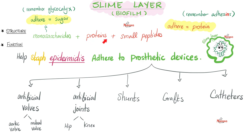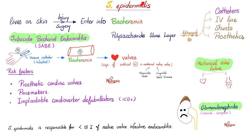The slime layer contains proteins like adhesins, small peptides, and monosaccharides — because as you know, sugar makes you sticky. This is how Staph epidermidis adheres to prosthetic devices such as artificial valves, artificial joints, shunts, grafts, catheters, central venous lines, and arterial lines. Staph epidermidis lives on the skin.